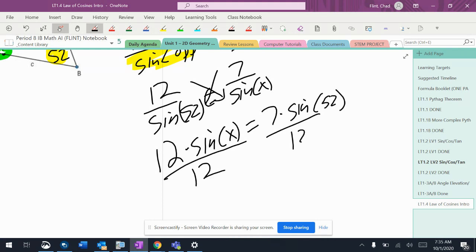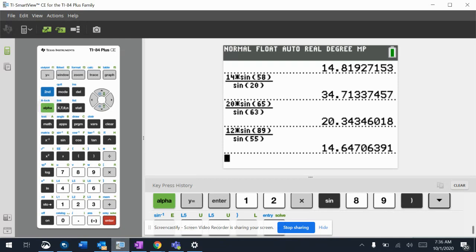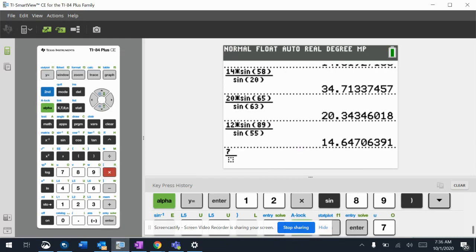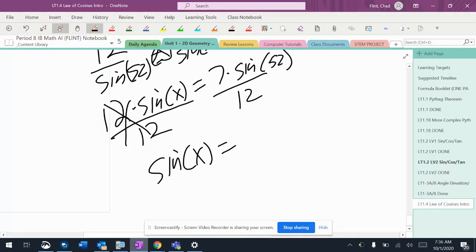If you get rid of the 12, so the x is by itself, like that sine of x equals whatever that decimal is right there. So 7 times sine of 52 over 12. Make sure that's right. Yeah, that's right. So 0.459.